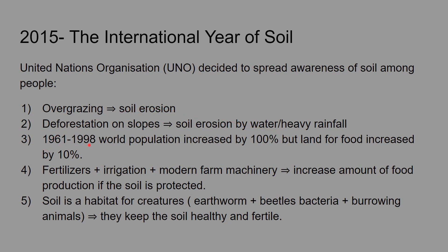From 1961 to 1998, the world population increased by 100 percent, but the land for food only increased by 10 percent. This means the number of people is increasing much faster than the available land, which means there is not enough food to cater to the needs of so many people.